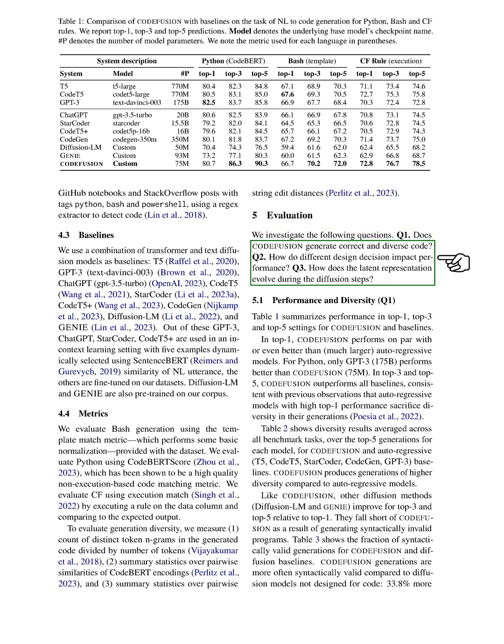First, does our system generate accurate and varied code? Second, how do different design choices affect the system's performance? And third, how does the latent representation change during the diffusion steps?